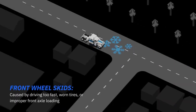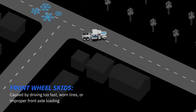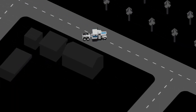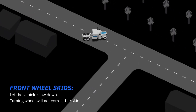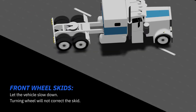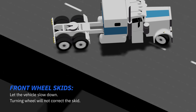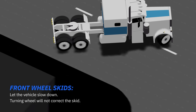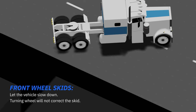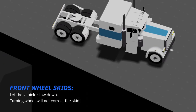Front wheel skids are usually caused by driving too fast for road conditions, but they can also be caused by a lack of tread on the front tires or by improper loading that doesn't place enough weight on the front axle. In a front wheel skid, the vehicle doesn't respond to turning the wheel and instead tends to continue in a straight line. The only way to stop a front wheel skid is to let the vehicle slow down.